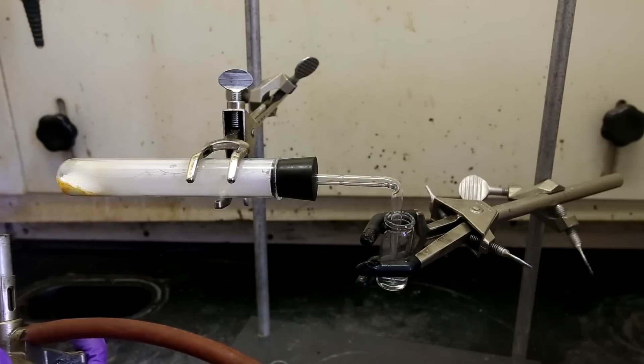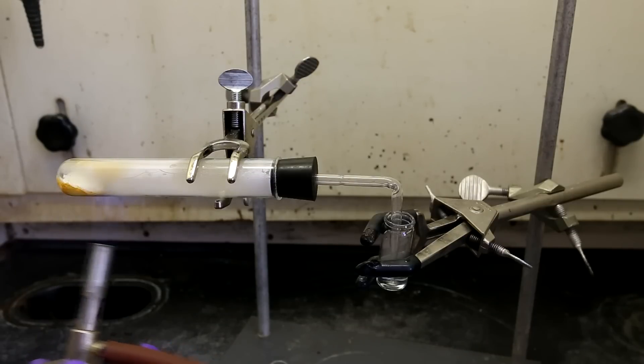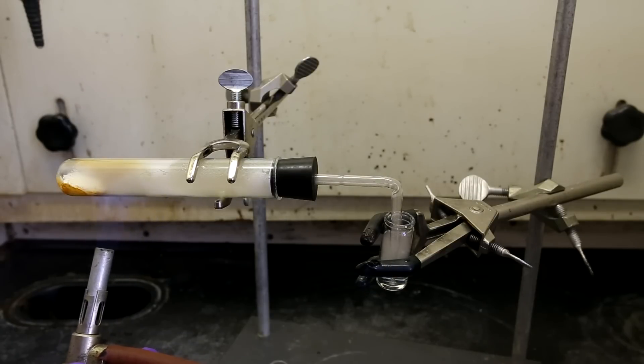However, since cadaverine boils at 179 degrees Celsius, a lot of it is going to be vaporized. The cadaverine in its vapor form will lead out of the tube and then bubble through the water and be trapped.